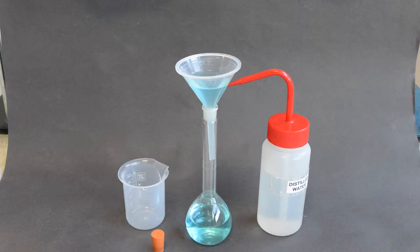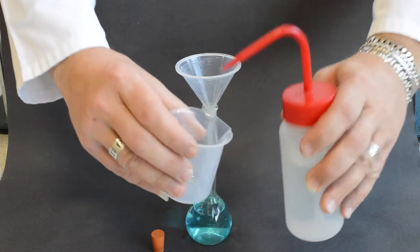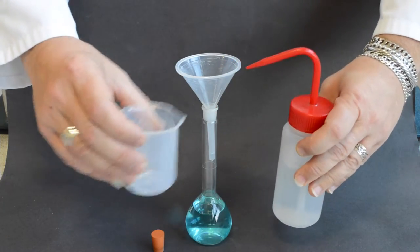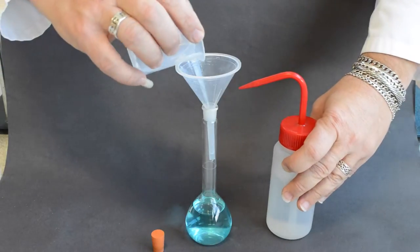To ensure that all the sample solution is transferred to the volumetric flask, wash out the 100 milliliter beaker with distilled water.